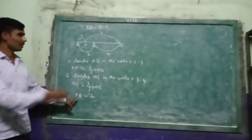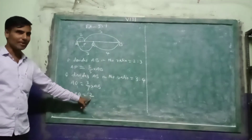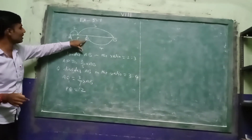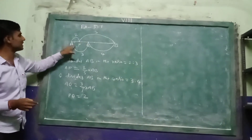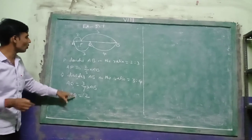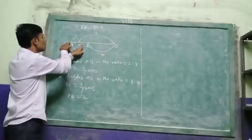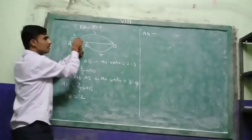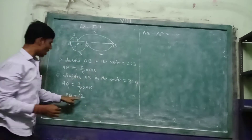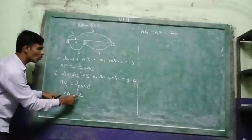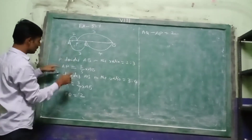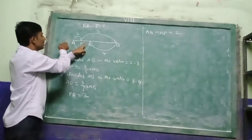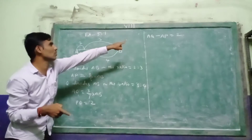PQ equal to 2 is given. Now, PQ means AQ minus AP. So PQ equal to AQ minus AP equal to 2. We wrote AP equal to 2 by 5 into AB and AQ equal to 3 by 7 into AB.